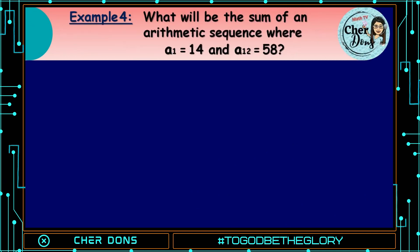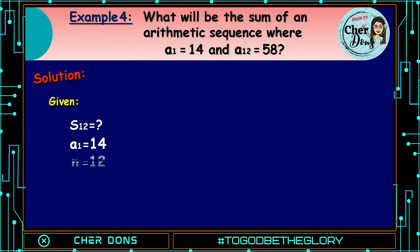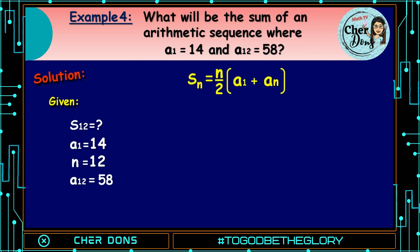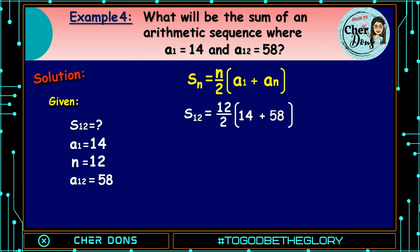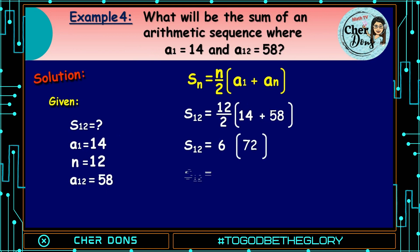Example number 4: What will be the sum of an arithmetic sequence where a sub 1 is 14 and a sub 12 is 58? Given: S of 12 is unknown, a sub 1 is 14, n is 12, a sub 12 is 58. Applying the formula: S of n is equal to n over 2 multiplied by (a sub 1 plus a sub n). We use this formula because the last term is given. Where 14 goes to a sub 1, 12 goes to n, 58 goes to a sub n. S of 12 is equal to 12 divided by 2, that is 6, multiplied by (14 plus 58), that is 72. S of 12 is equal to 6 times 72, which equals 432. Therefore, the sum of the first 12 terms is 432.